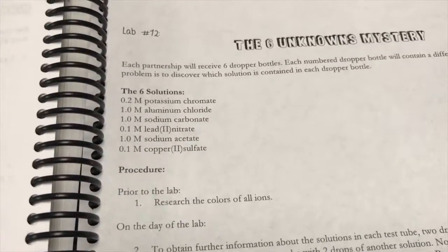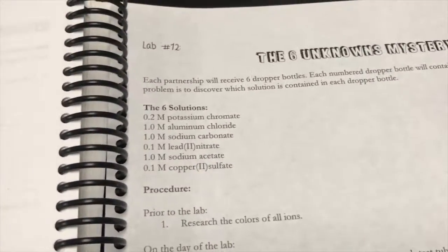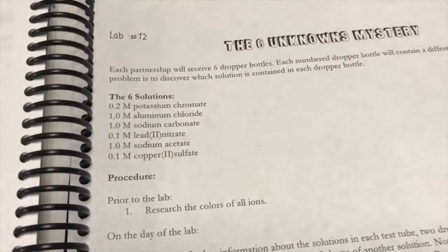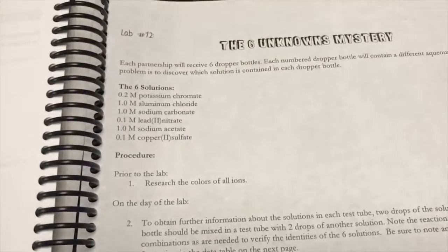If you're not able to figure out their identity by color, or if you want to confirm the identity of other solutions, what you will then do is combine drops of each solution and note in this data table what you observe.